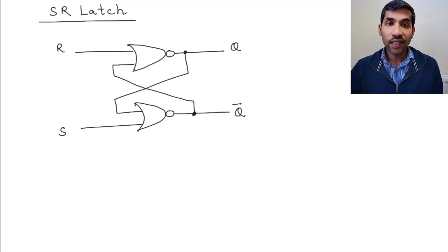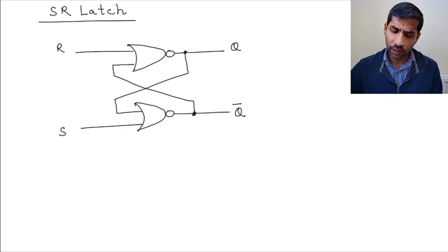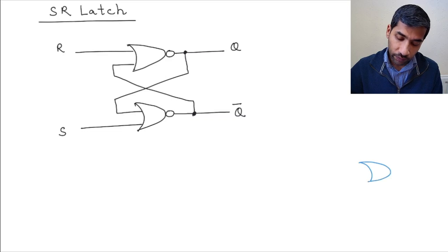To see how this functions, what we want to do is give different inputs of R and S and see how the latch works. But before we do that, I just wanted to remind you of how a NOR gate functions. If you have a NOR gate, so let me just draw it here, and you have inputs A and B going into it and the output is Q.